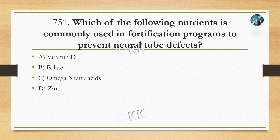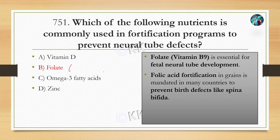Which of the following nutrients is commonly used in fortification programs to prevent neural tube defects? Option A: Vitamin D, Option B: Folate, Option C: Omega-3 fatty acids, Option D: Zinc. The correct answer is Option B, Folate — also known as Vitamin B9. It is essential for fetal neural tube development. Folic acid fortification is done in food grains like pulses and wheat to prevent birth defects like spina bifida.